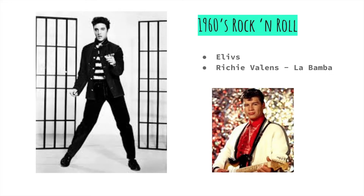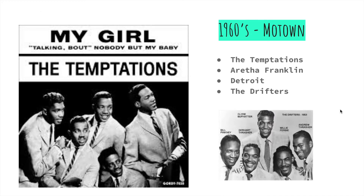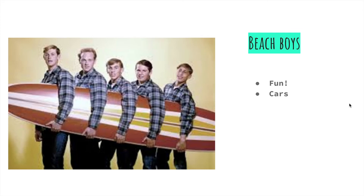After that, we had rock and roll, which became very popular in the 60s with people like Elvis — a really good singer and dancer. And other people like Richie Valens, who wrote the song La Bamba. Then we had Motown, which came from Detroit. We had groups like the Temptations, who would sing and dance, and the Drifters. And then we also had the Beach Boys — their songs were really fun and they liked to sing about cars, going to the beach, and surfing.